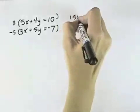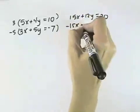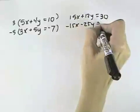When I do that, the top equation becomes 15x plus 12y equals 30. The bottom equation becomes negative 15x minus 25y equals 35.